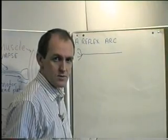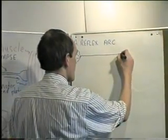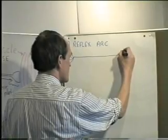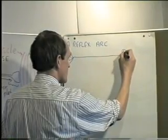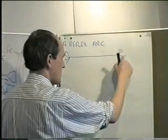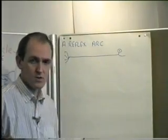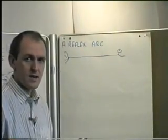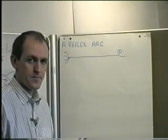As it comes near the nervous system, there will be a sensory neuron cell body. Then the axon of the sensory neuron will start to move in towards the nervous system.